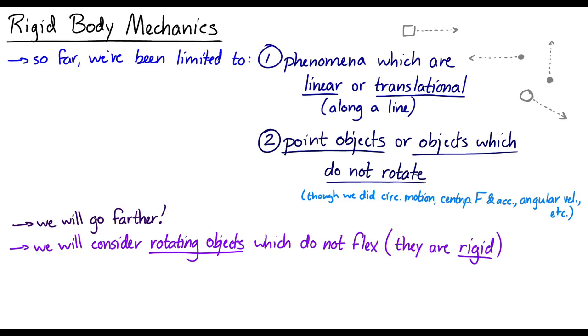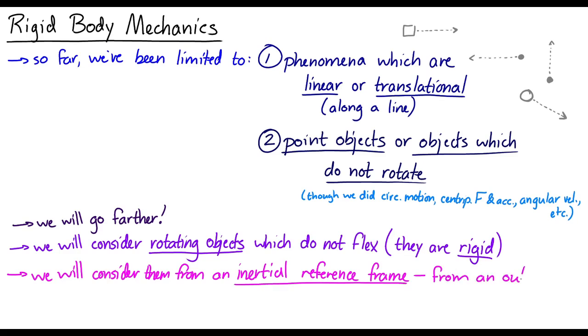But these rotating objects, when we consider them, we're going to consider them from what's called an inertial reference frame. So an outside reference frame, not from the perspective of within the rotating object. We're going to imagine we're outside of the rotating object, watching the rotating object.